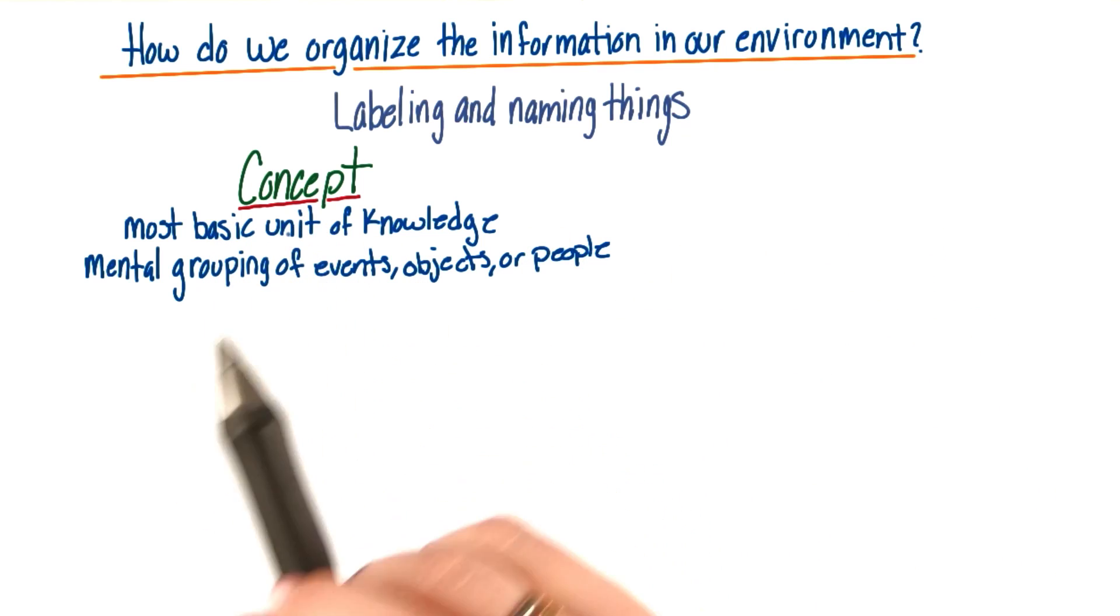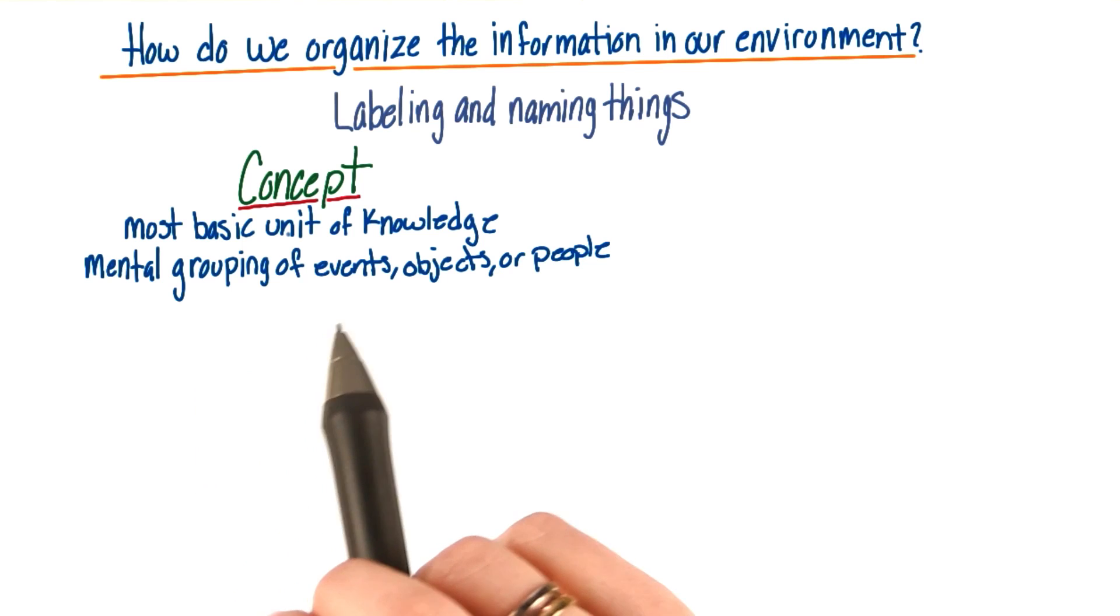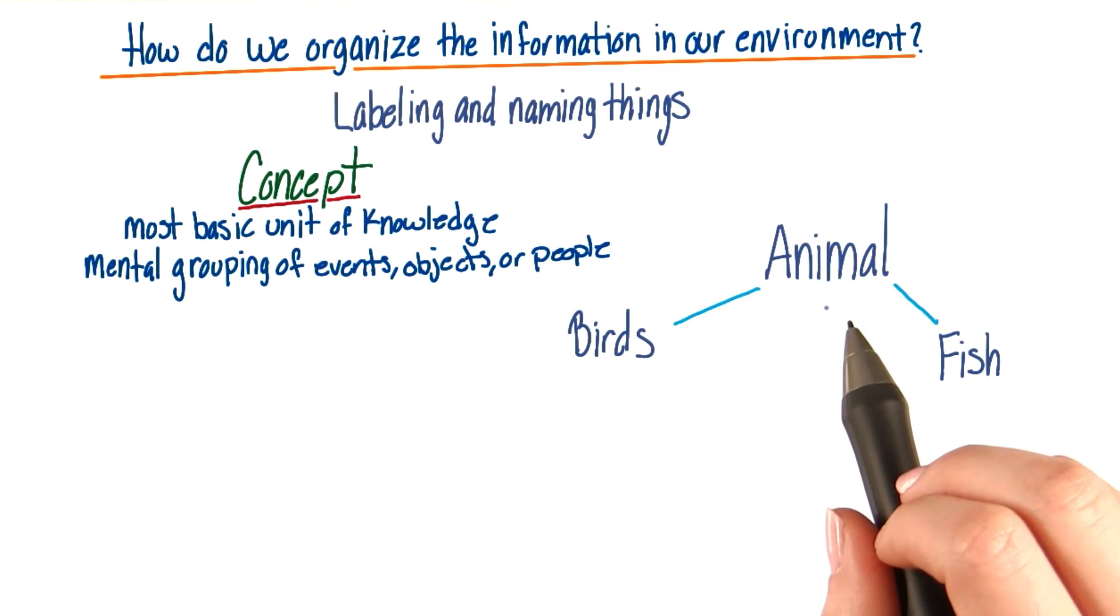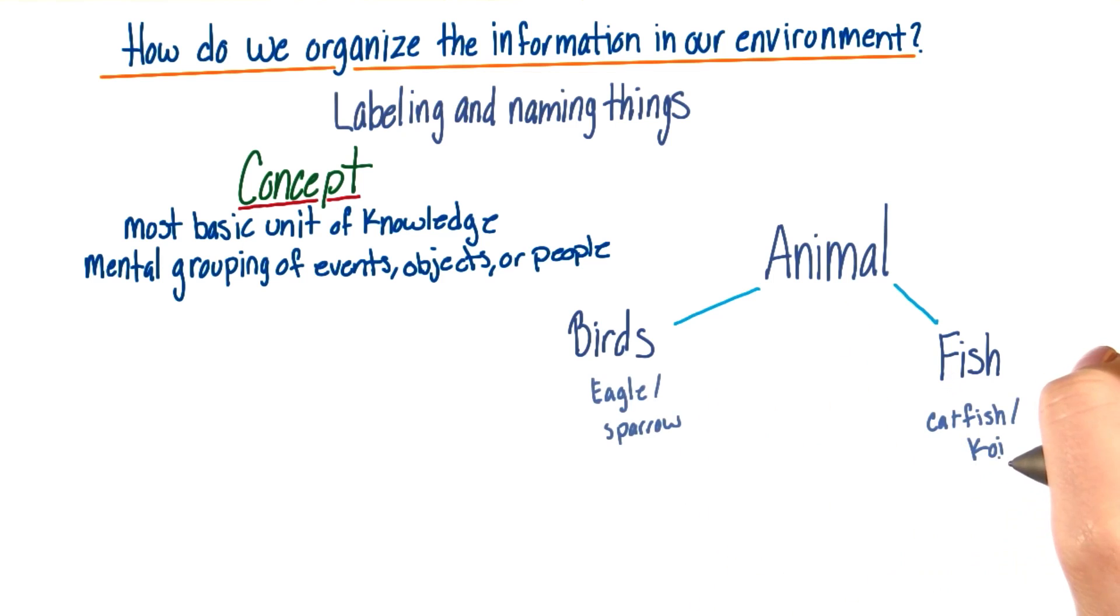The concept is a mental group of events, objects, or people. So for example, the concept of an animal can include mental groups for birds and fish. And these can be broken down even further into different types of birds, for example, an eagle or sparrow, and different types of fish, for example, a catfish or a koi fish.